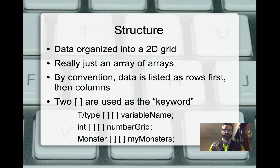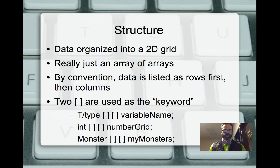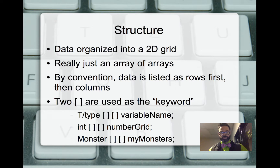As you can see right here, we have the type, and the sets of square brackets belong to the multidimensional array. In this case it's a 2D grid, so it has two sets of square brackets. If we're doing a three-dimensional space, we'd have three square brackets. Then the variable name followed by a semicolon. We have a sample of an int and a monster array, showing a primitive as well as an object, so we can see how to declare those.